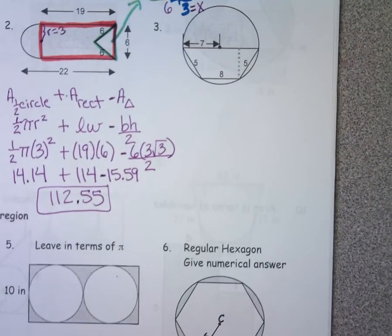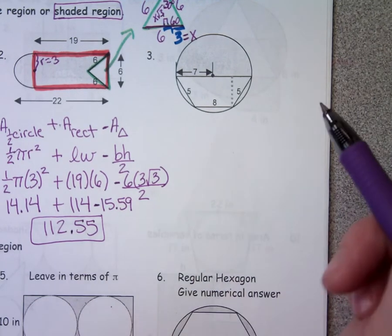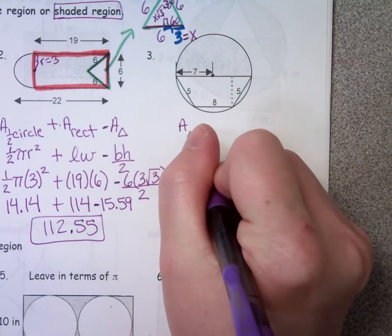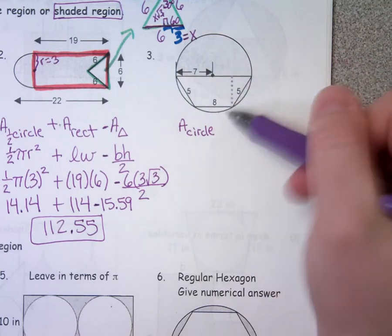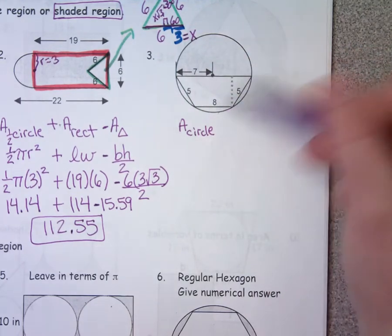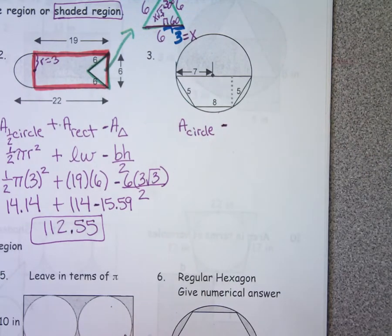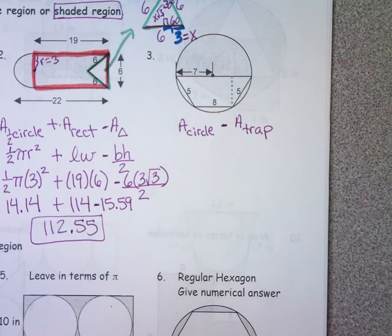Looking at this next picture, I want to find the area of the shaded region. What's the game plan? We'll subtract at the end. So I'm going to find the area of the circle first. If I find the area of the entire circle, that's too much shading, so I'm going to need to subtract the area of the trapezoid. That is exactly what our game plan is.